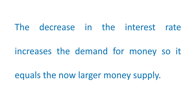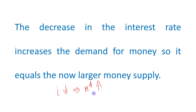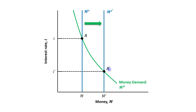The decrease in the interest rate increases the demand for money, so it equals the now larger money supply. When interest rates are lower, people will not be willing to keep their wealth in bonds, so they will keep more money with themselves. Money demand will increase until we reach the new equilibrium point at which money demand again equals money supply — and that new equilibrium is established at point A dash, the new equilibrium interest rate.